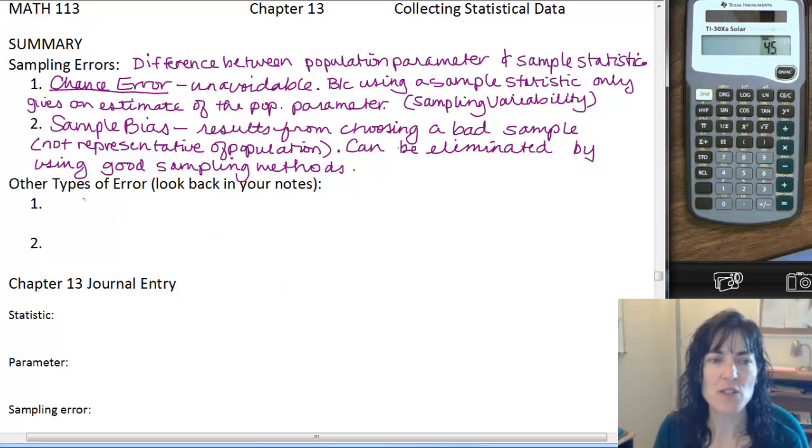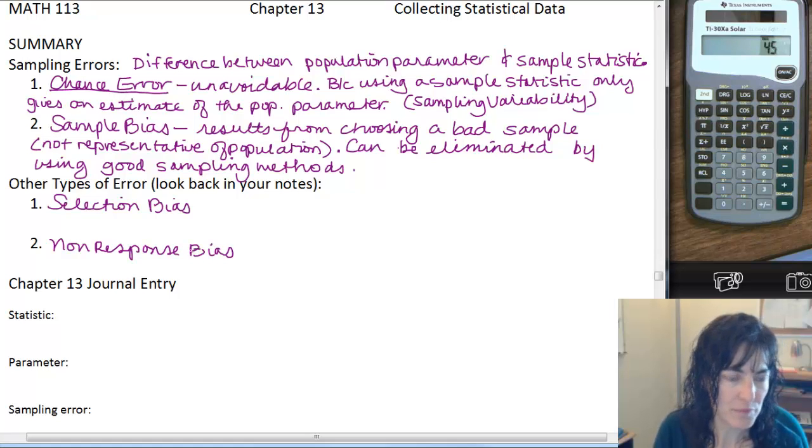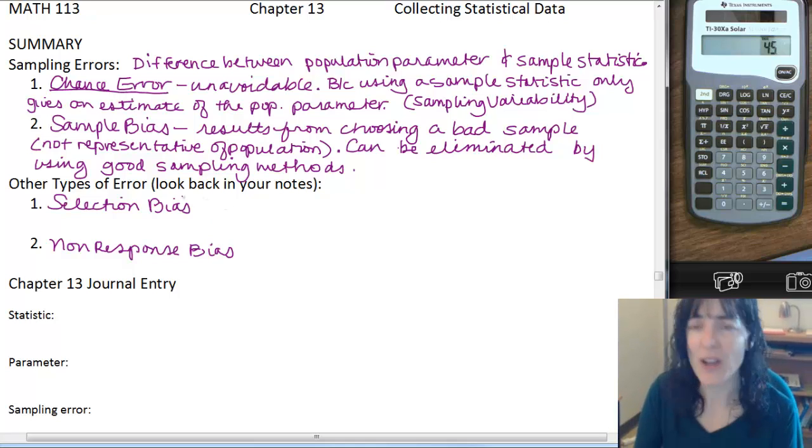Other types of errors. And you may need to look back in your notes for more information on these, but I'm just going to give you the summary of those. You have selection bias and you have non-response bias. And there are more types definitely. You could also look on page 502, I think they're defined there.